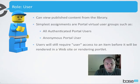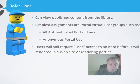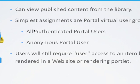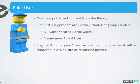Starting at the bottom, the user role is the lowest level of access. You have to at least be in the user role if you want to be able to view any published content from the library. One of the easiest ways to apply security at the library level for this role is to use the virtual user groups in Portal, such as all authenticated portal users or the anonymous portal user. Sometimes you might want to put both of those groups in the user role. It's important to remember that even if you're in the user role at the library level, you still need to be in the user role at the item level if you want to view published content — so you need it in both places.